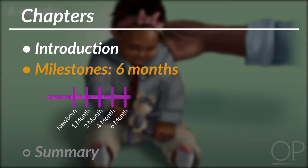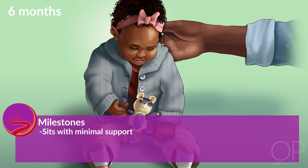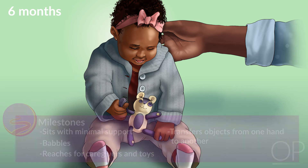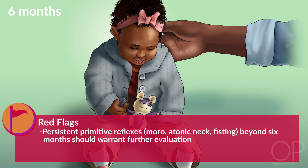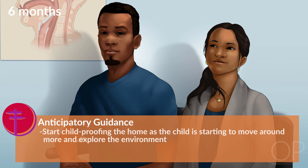Six months: At six months, she masters the ability to sit with support and begins to babble with consonants. She reaches for caregivers and for toys and will transfer a toy from one hand to the other. She is eager to explore, and all of her primitive reflexes should be gone. Persistent primitive reflexes beyond six months is a red flag and warrants further evaluation. It is a good time to start childproofing the home as the child is starting to move around more and explore the environment.